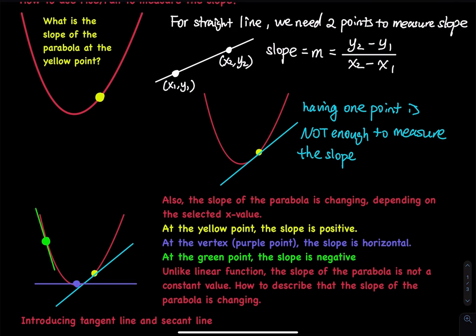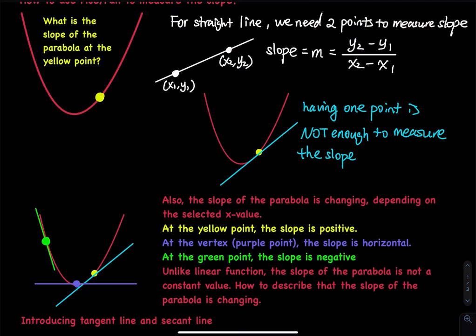In the next picture, I have a parabola and then I have four dots — one green, one purple, and one yellow. My question is: can you measure the slope of the curve at the green point, the purple point, and the yellow point? I have a parabola, not a straight line. I have a green point, a purple point, and a yellow point. For each point, tell me the slope of the curve at that point.